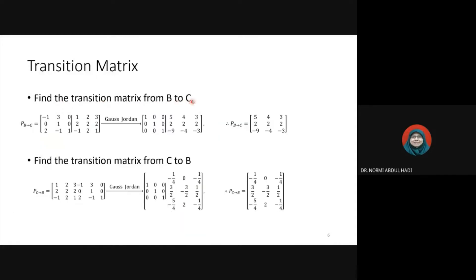For the transition from B to C, the left-hand side is the vectors in C and the right-hand side is vectors in B. Reduce C to an identity matrix, and B automatically produces the transition matrix from B to C. For the transition from C to B, B is on the left and C is on the last three columns. PCB is the inverse of PBC. So to find PCB, you can either start from scratch using Gauss-Jordan elimination, or simply invert PBC.